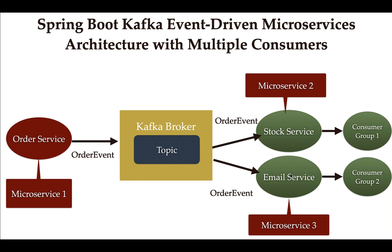The order service can send events to the Kafka topic and the stock service can consume them - that flow is complete. Next, we need to configure a Kafka consumer in the email service so that the email service can also consume messages from the Kafka topic. We'll cover that in the next lecture.